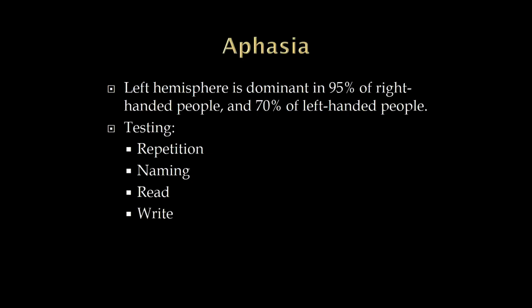If we use the term aphasia, now we're saying there is a problem with the language pathways in the brain — Wernicke's, Broca's, the connection between them. Language is usually in the left hemisphere: if you're right-handed, there's a 95% or greater chance you're language dominant in the left hemisphere; if you're left-handed, still roughly 70% chance.